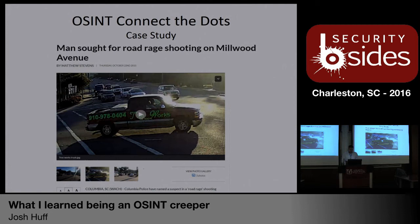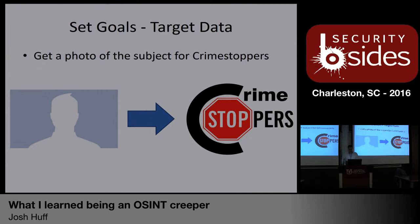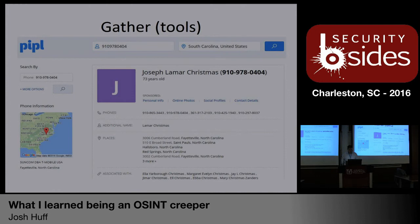This was last year in October. A road rage incident happened in Columbia. Two gentlemen in vehicles — one guy pulls a gun and takes a shot at the other one, then flees the scene. Surveillance footage captures a big bright phone number on the side of the vehicle. Going back to OSINT Connect Dots, we start with our known items. In the news stories posted with this, Crime Stoppers was looking for information. They provided a name — Joseph Lamar Christmas II, age 39 — the big bright green phone number from the truck, and ties to North Carolina and South Carolina cities. We set our target data: let's get a picture of the guy that they didn't provide and feed it to Crime Stoppers. Go to people.com as the first stop. Plugged in the phone number from the truck plus South Carolina, and immediately it pulls up a hit for Joseph Lamar Christmas, 73 years old.